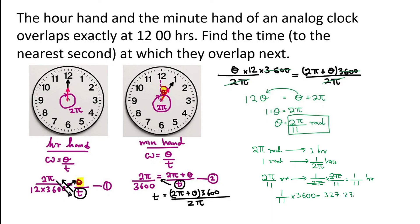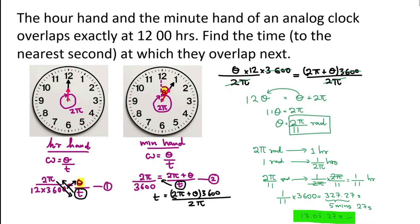Now, we know 300 seconds is 5 minutes. So, this is 5 minutes and 27 seconds to the nearest second. Now, the question is the time. So, the time will be 1:05 and 27 seconds.